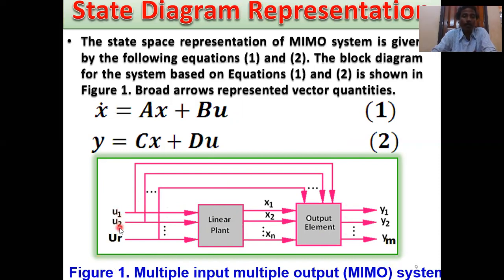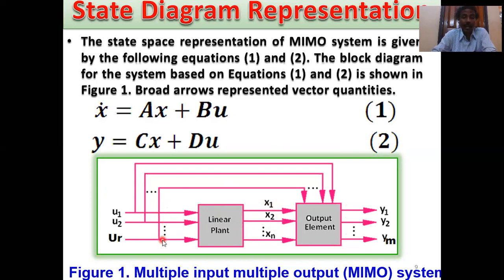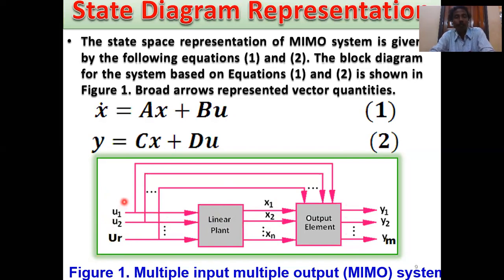The input is U1, U2, U3 ... UR, which is an R×1 matrix. The overall output is Y1, Y2, Y3 ... YM, which is an M×1 matrix. The state matrix contains X1, X2, X3 ... XN. X1-dot integrates to X1, X2-dot integrates to X2, X3-dot integrates to X3, and XN-dot integrates to XN. On the input side, the input may be step, ramp, parabolic, or impulse — you can apply any type of input.